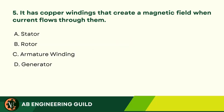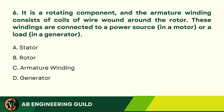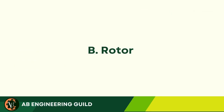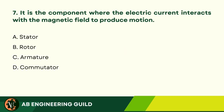Question 5. It has copper windings that create a magnetic field when current flows through them. A. Stator. B. Rotor. C. Armature winding. D. Generator. Answer: C. Armature winding. Question 6. It is a rotating component, and the armature winding is wound around it. A. Stator. B. Rotor. C. Armature winding. D. Generator. Answer: B. Rotor. Question 7. It is the component where the electric current interacts with the magnetic field to produce motion. A. Stator. B. Rotor. C. Armature. D. Commutator. Answer: C. Armature.